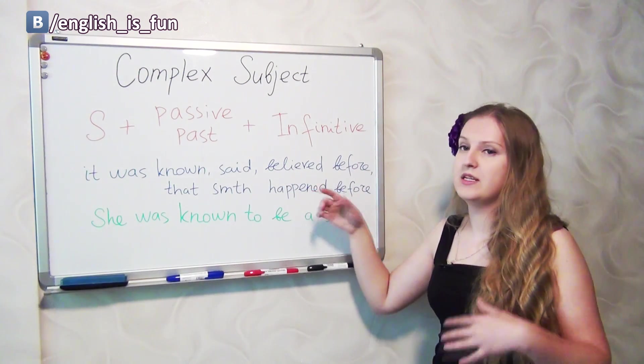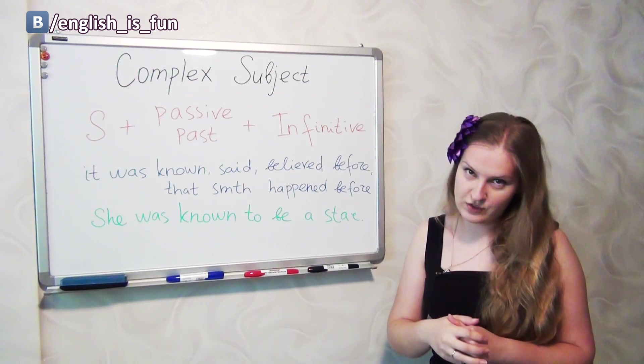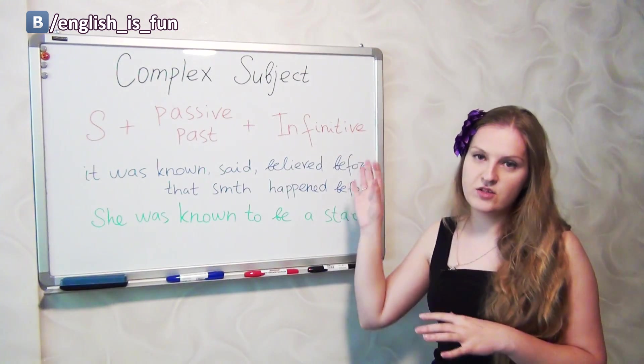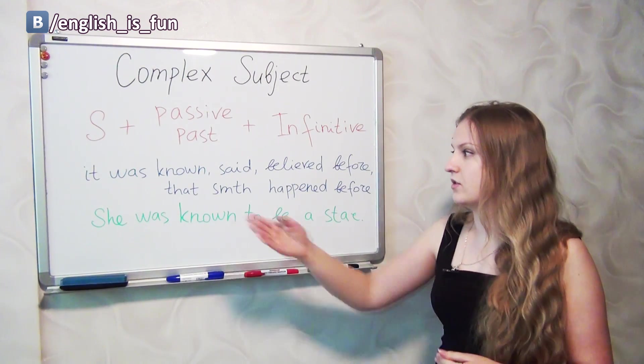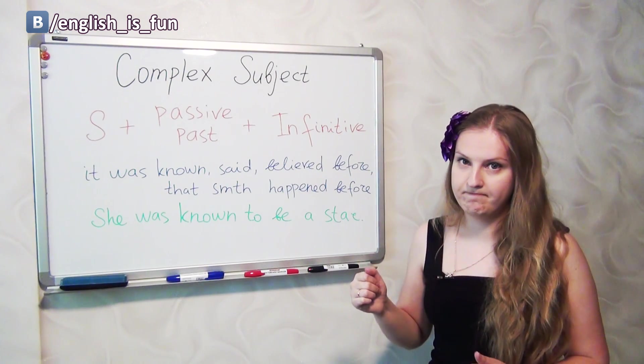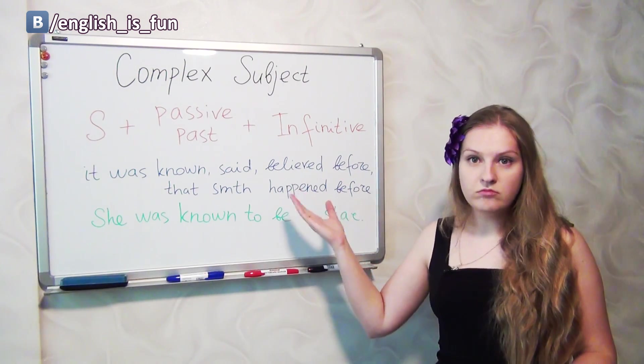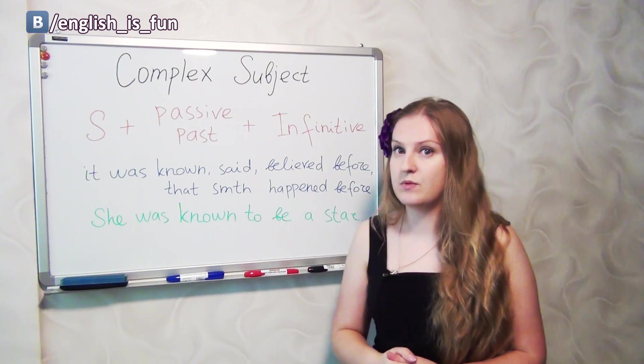In this case it was known, said, believed and so on, before that something happened also before. So both parts of this construction are actually connected with the past. So it was known and she was a star. So here we deal with the past. Both parts of the sentence are connected with the past.